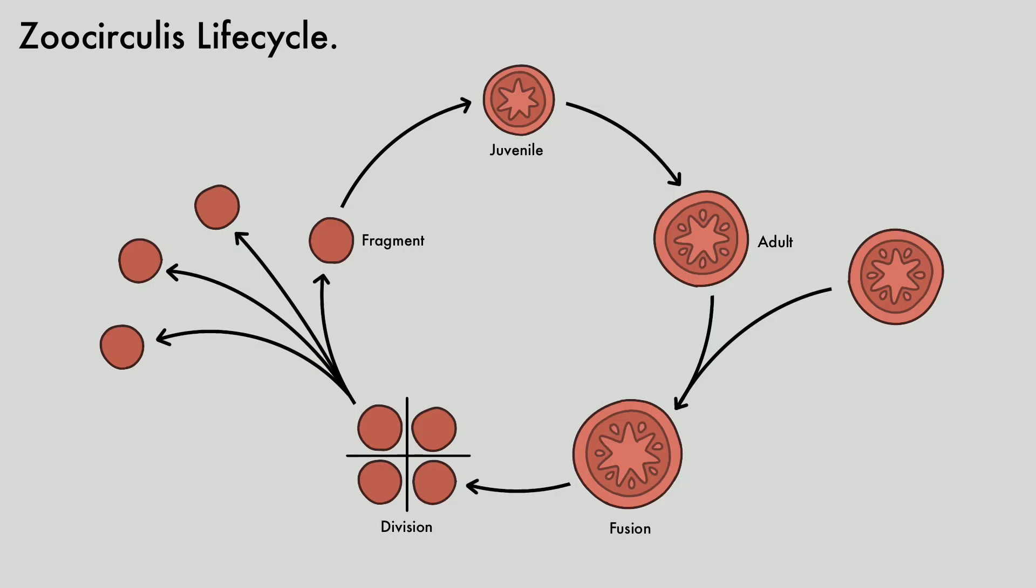Zoocirculids have one of the most unusual reproductive cycles known. The cycle starts when two sexually mature individuals meet each other by chance. The two individuals will then fuse into a single organism with the genes of both individuals.